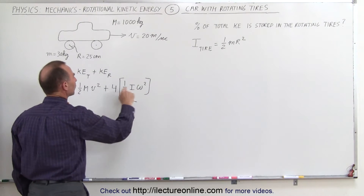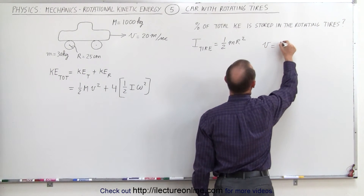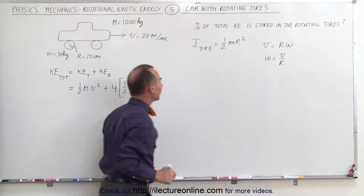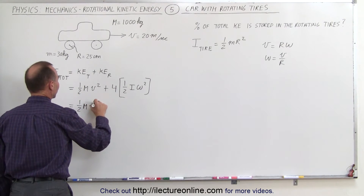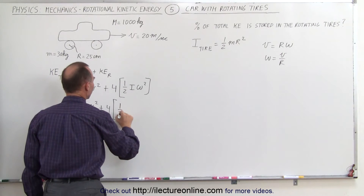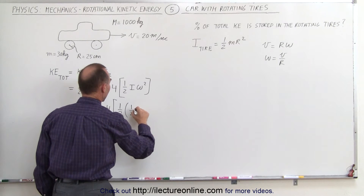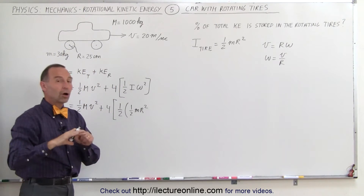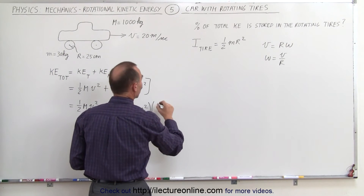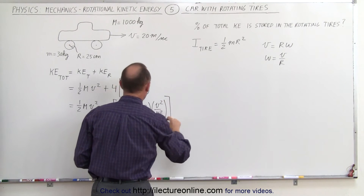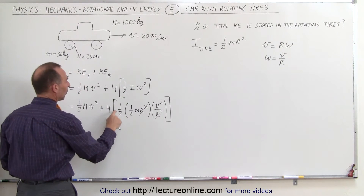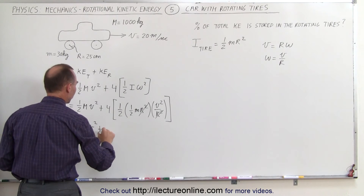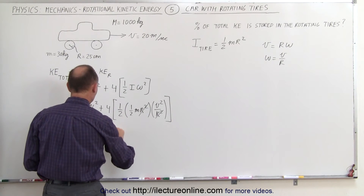Now let's plug in what we know for the moment of inertia. We also realize that the tangential velocity equals r times omega, which means the angular velocity omega equals v divided by r. Substituting I equals one half m r squared and omega equals v over r, the r squared terms cancel, and we get one half M v squared plus four times one half times one half times m v squared, which simplifies to one half M v squared plus m v squared.